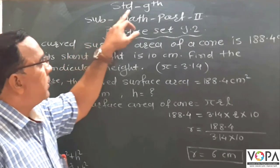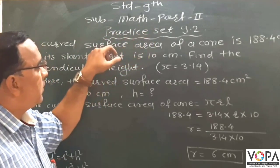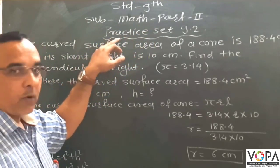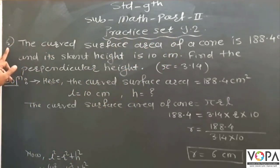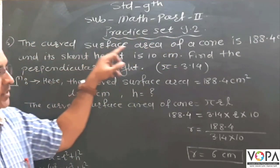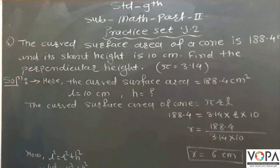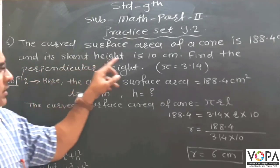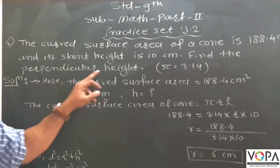Now Standard 9, subject math part 2. Now to solve the problem set 9.2, problem number 6. The curved surface area of a cone is 188.4 cm² and its slant height is 10 cm. Find the perpendicular height.